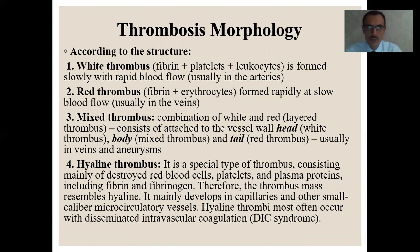Morphology according to structure: there are four types of thrombus. First, the white thrombus — which consists of fibrin with leukocytes and forms slowly with blood flow, usually in arteries. Second, the red thrombus — which includes red blood cells enmeshed in fibrin.